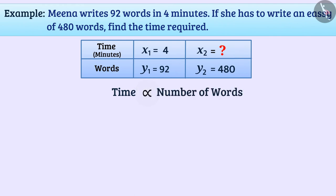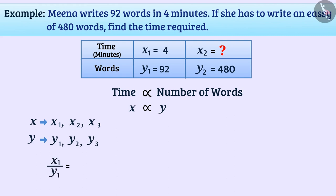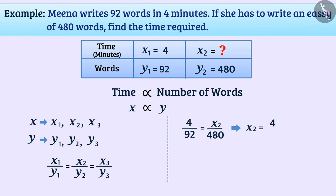In case of direct proportion, if x is directly proportional to y, then we can write x1/y1 = x2/y2 = x3/y3 and so on. Therefore, we can say that 4/92 = x2/480, which means x2 = (4/92) × 480 minutes = 20.86 minutes. Therefore, Meena needs 20.86 minutes to write an essay of 480 words.